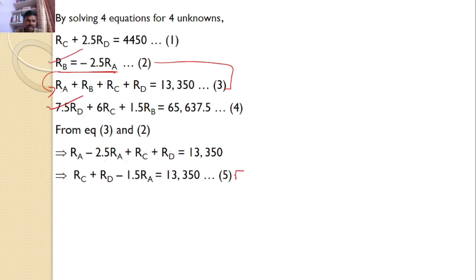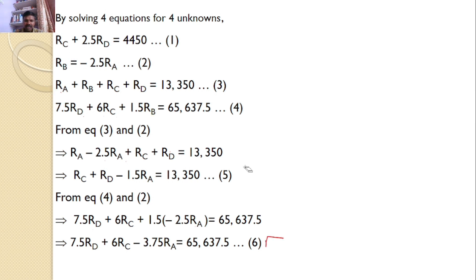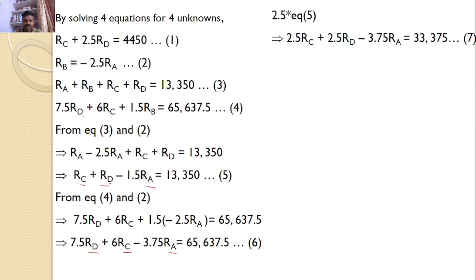Similarly, substituting R_B equals minus 2.5·R_A into equation 4: 7.5·R_D plus 6·R_C plus 1.5 into (minus 2.5·R_A) equals 65,637.5, giving Equation 6: 7.5·R_D plus 6·R_C minus 3.75·R_A equals 65,637.5. To eliminate R_A, I multiply Equation 5 by 2.5 to get Equation 7: 2.5·R_C plus 2.5·R_D minus 3.75·R_A equals 33,375.